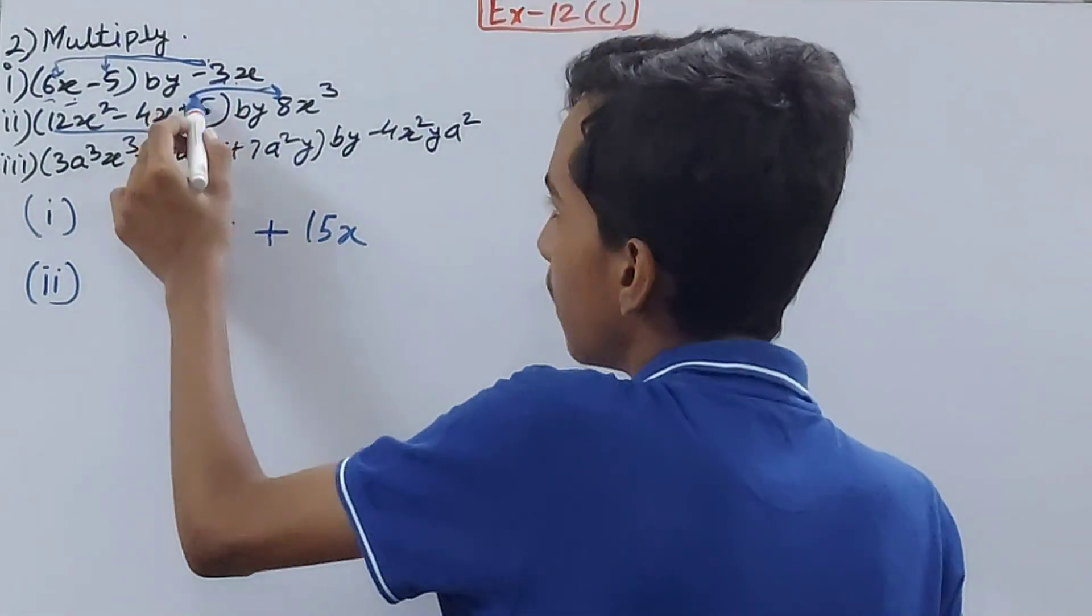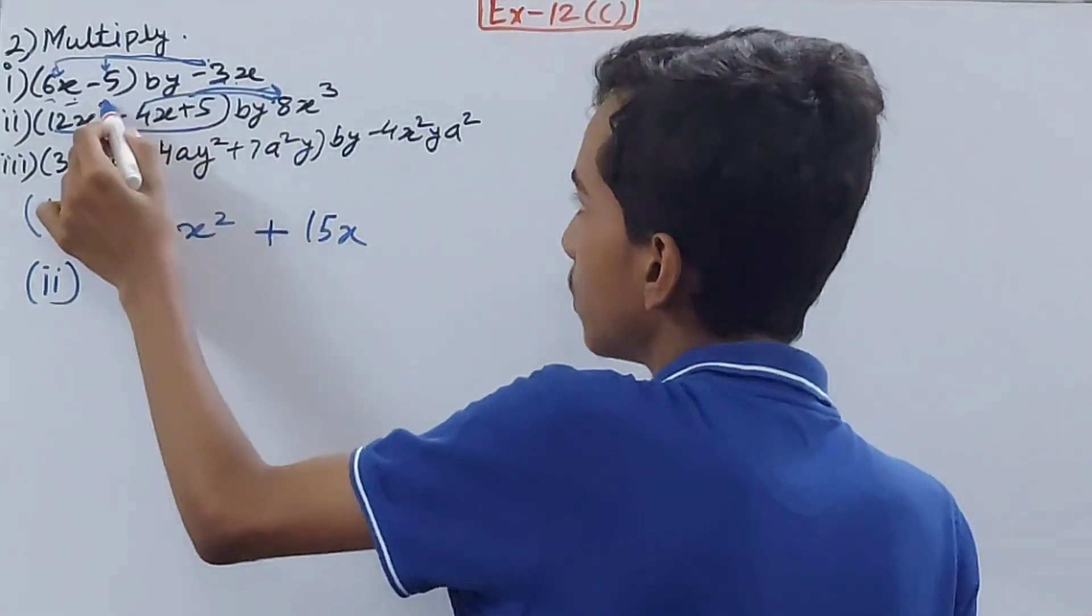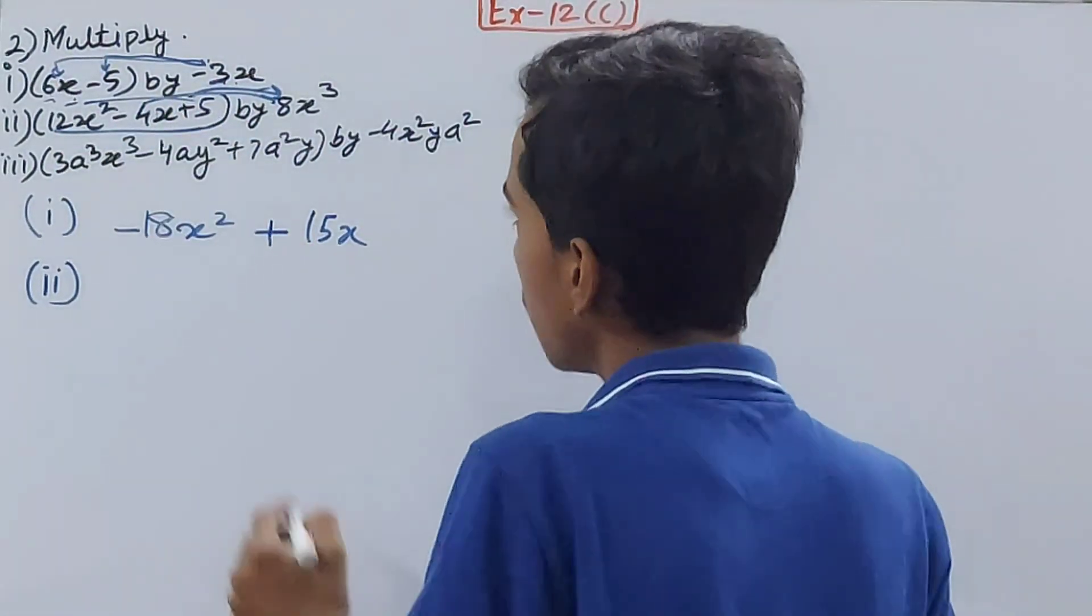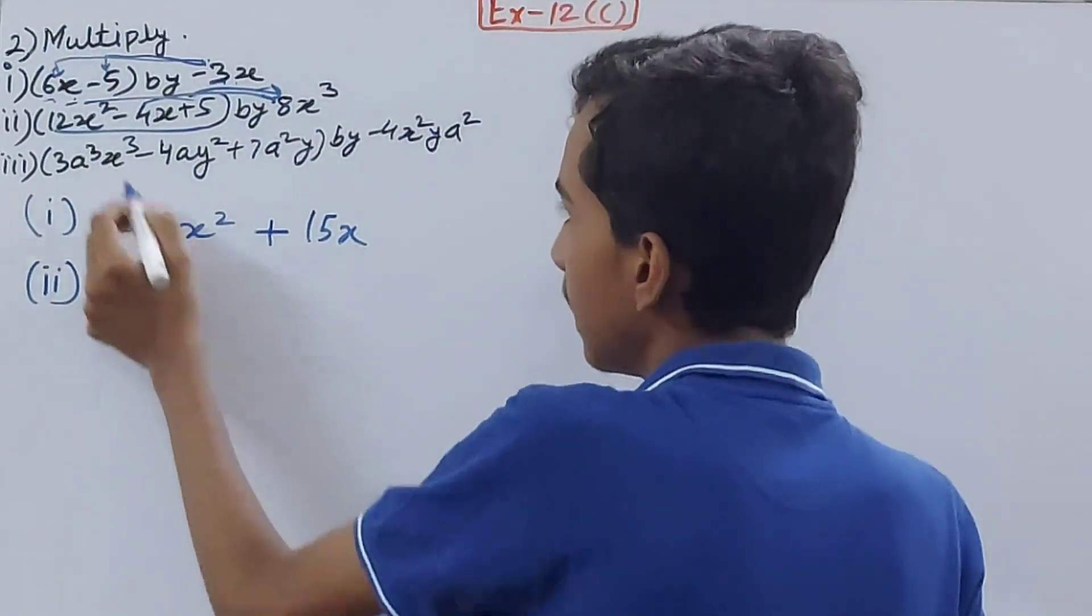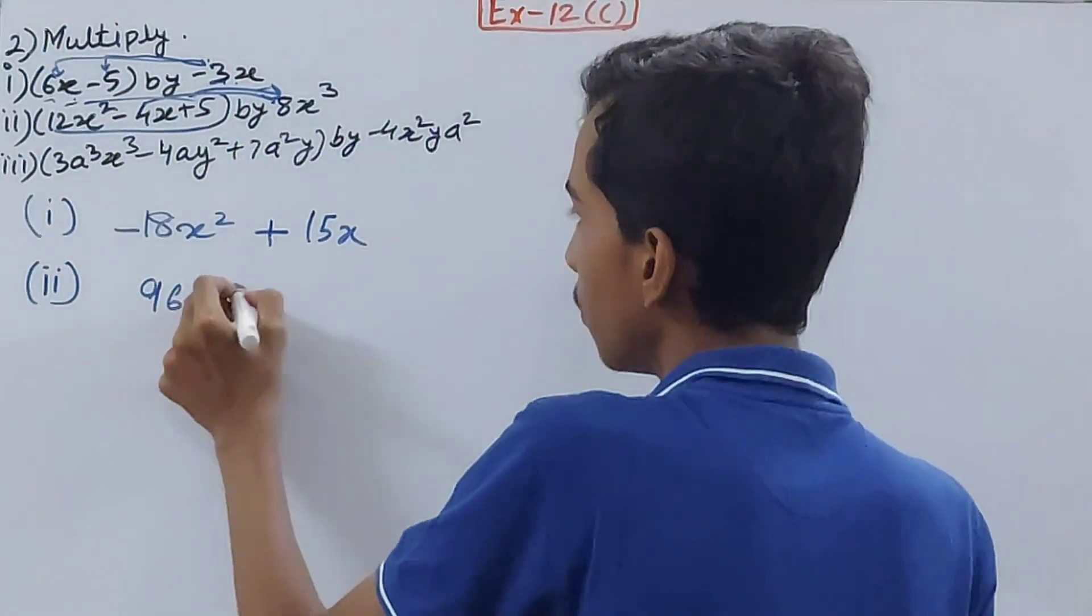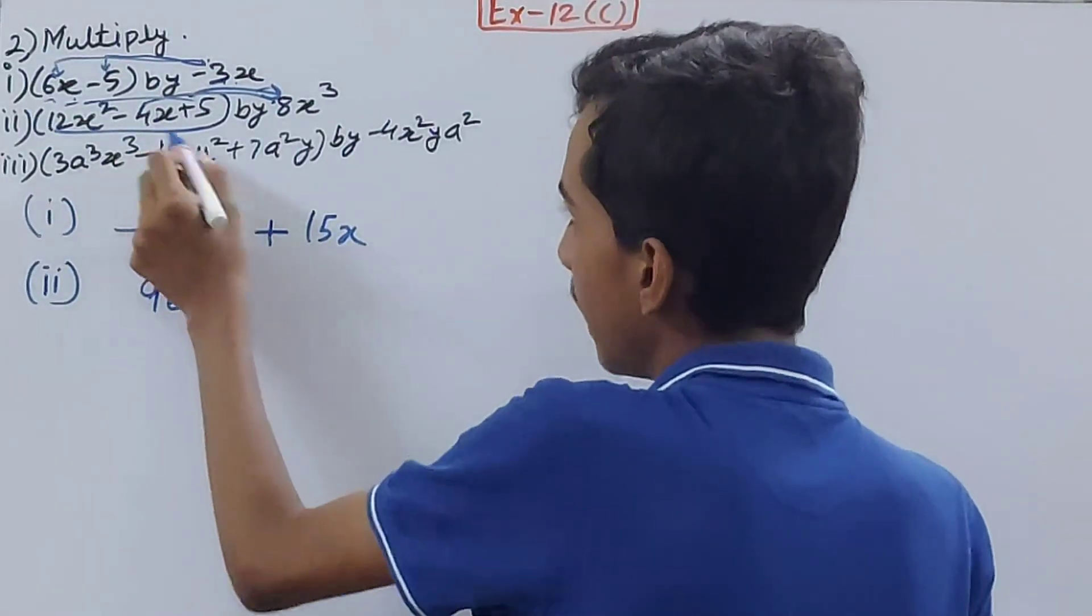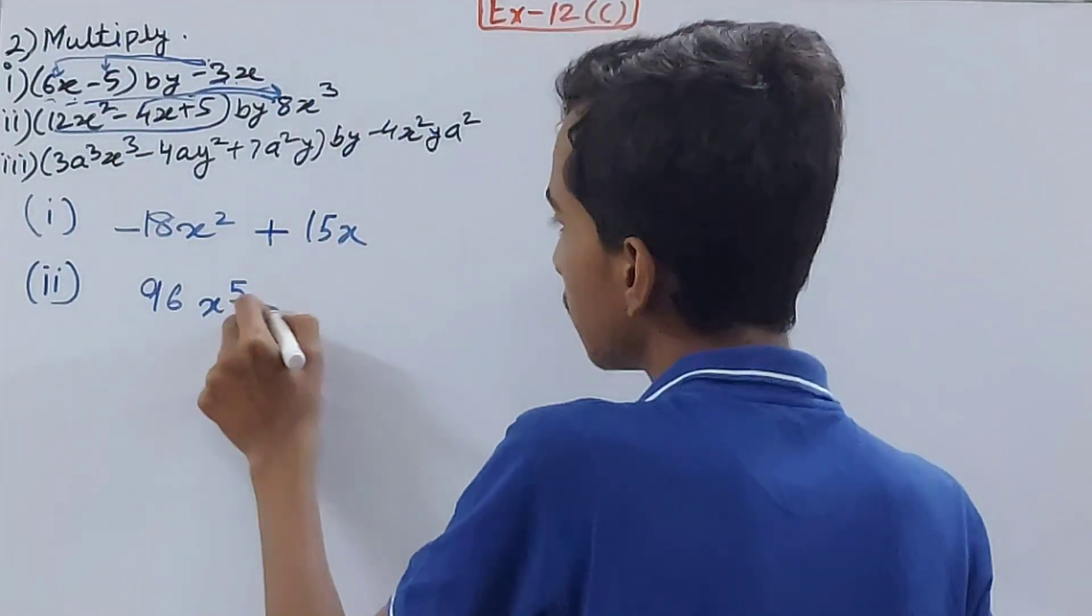12x² into 8x³ will become 96x⁵ (12 times 8 is 96, x² into x³ gives x⁵). Then -4x into 8x³: -4 into 8 is -32, and x times x³ gives x⁴.